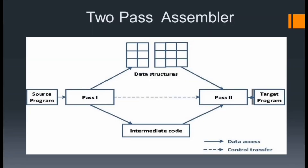Here in the diagram you can see that we have the source program going into Pass 1 and Pass 2, with data structures in between them. These data structures store data between the passes, producing intermediate code. When these two passes are completed, we get the targeted program — that means our machine code. Please note this diagram; it is very important for the two-pass assembler.